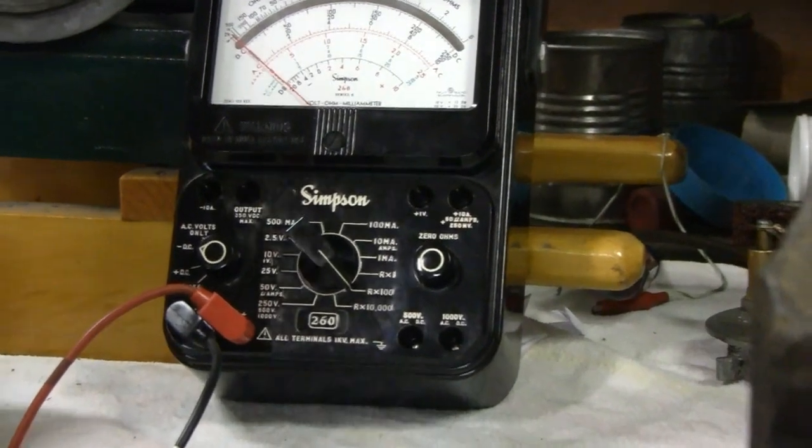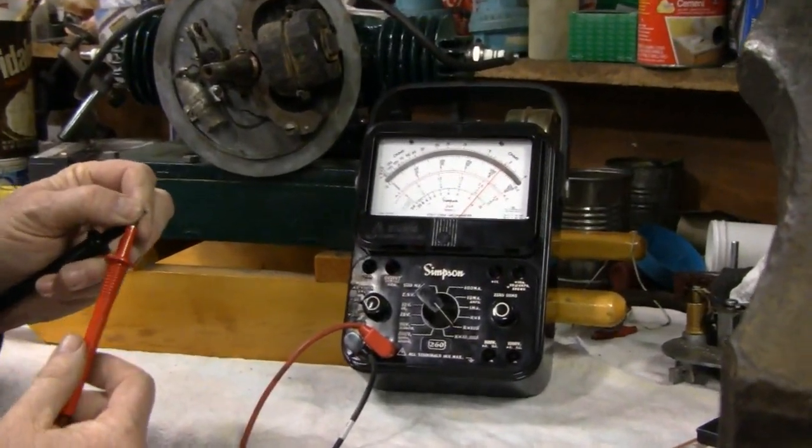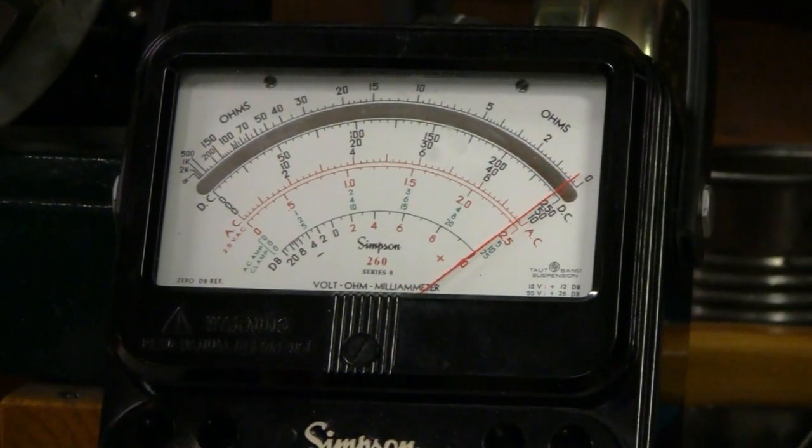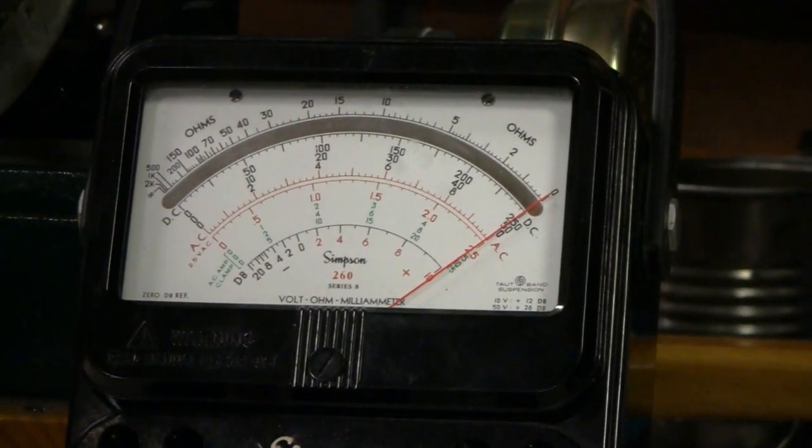So you take that and you put that at R times 100, and then you put your two needles together here, and you zero your ohms in. I don't know if you can see that, I've got a ratio behind the camera there. So you're right on zero.